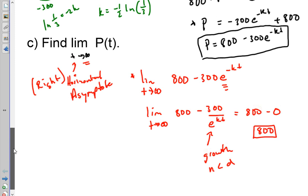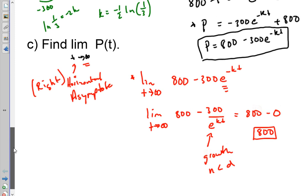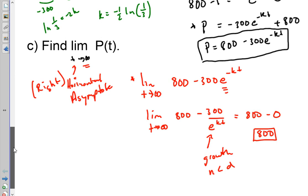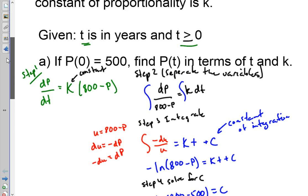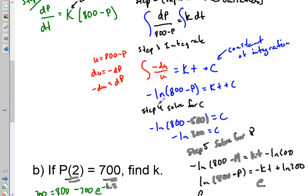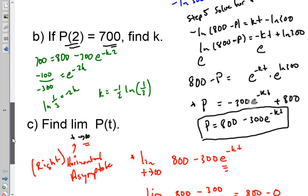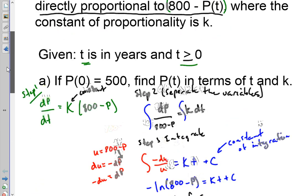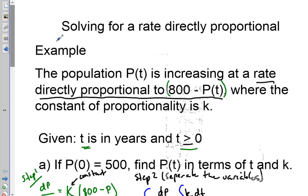This is a very common problem you see on AP tests — multiple choice and free response — many years running. Solving this differential equation is straightforward. For those wondering where the negative K comes from: K starts positive, and the negative comes from your algebra when you divide through. Good luck and God bless on the rest of the problems.